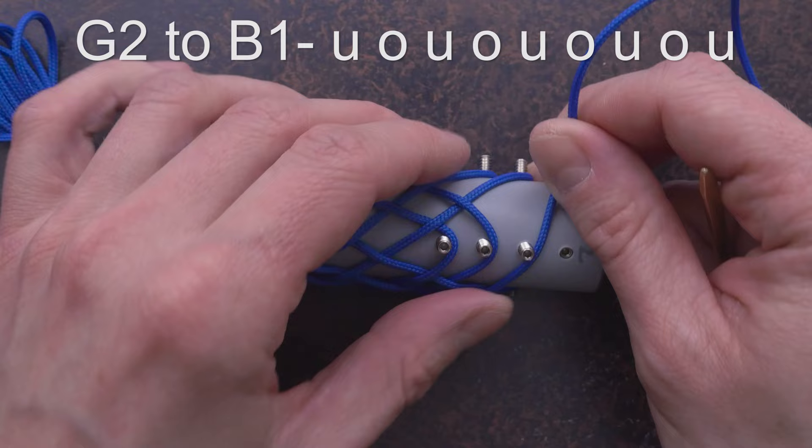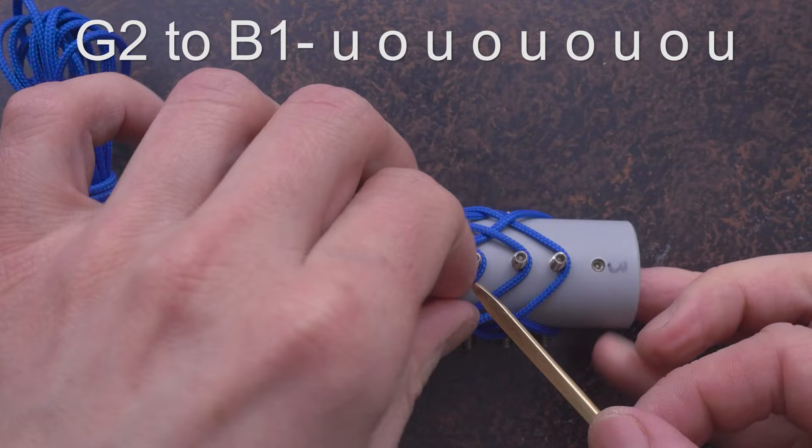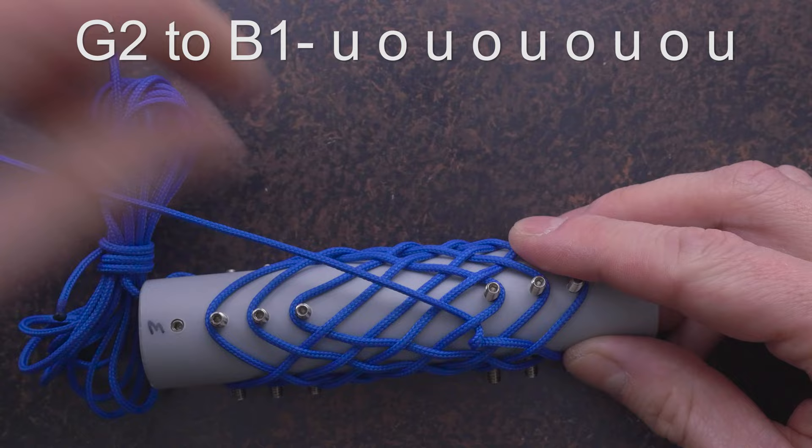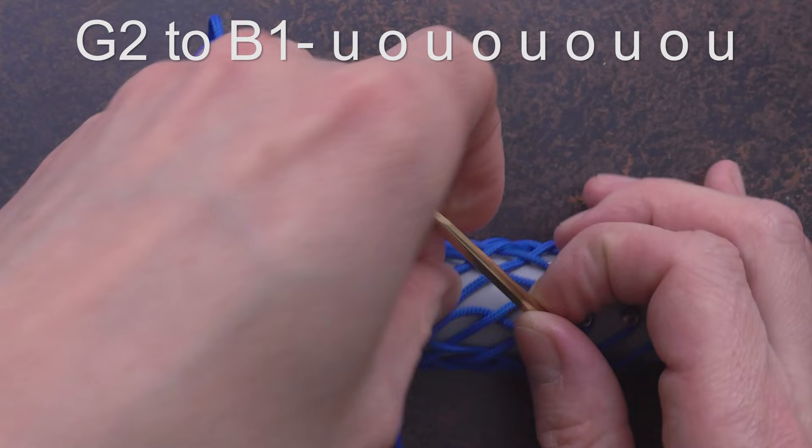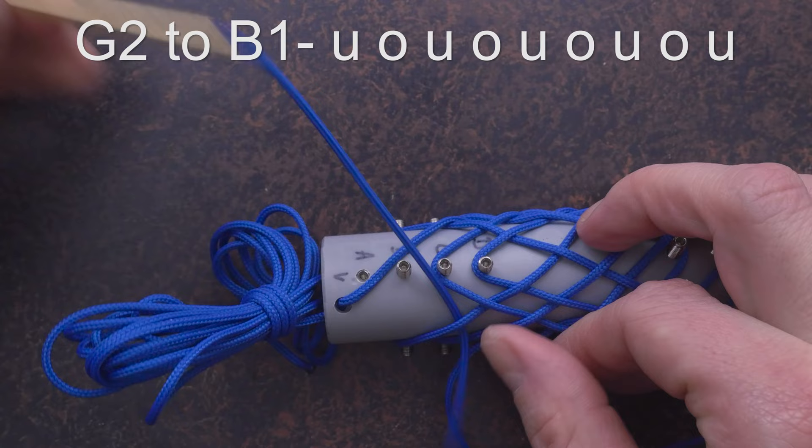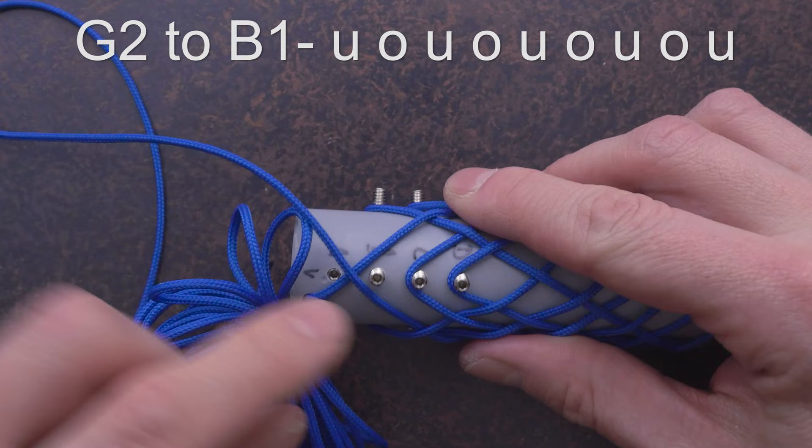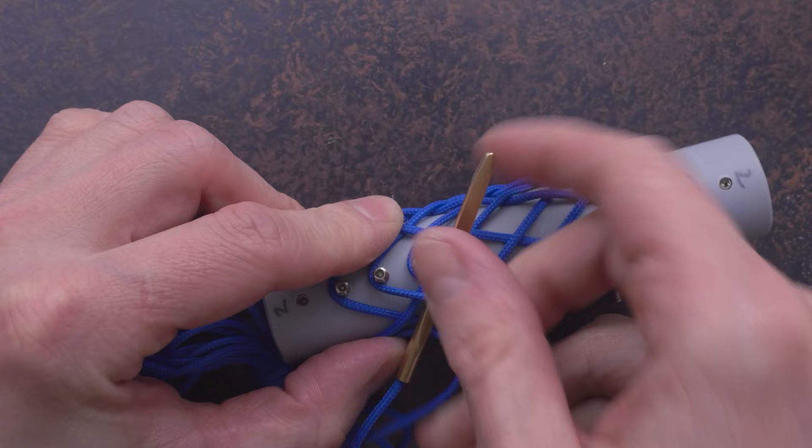We are now at our final pass, from G2 to B1. Starting under, then continuing over, under, over, under, over, under, under. At this point, we have reached B1. We place our working end next to the standing end, and we work it a bit further into the knot.